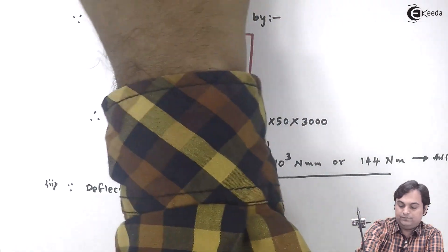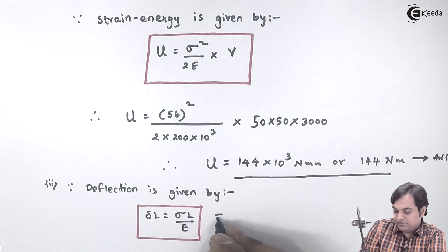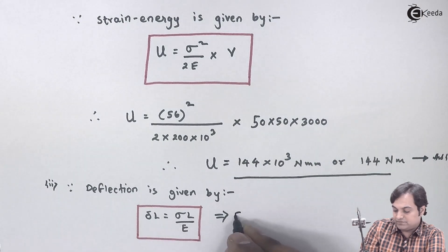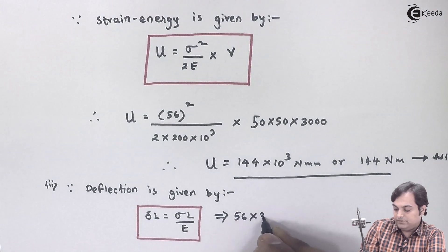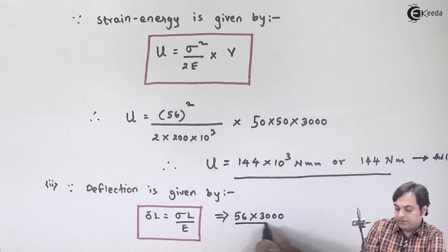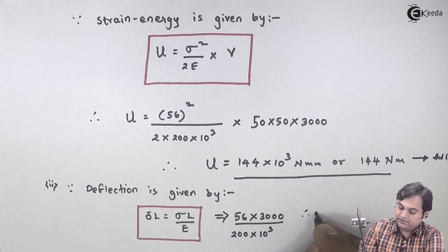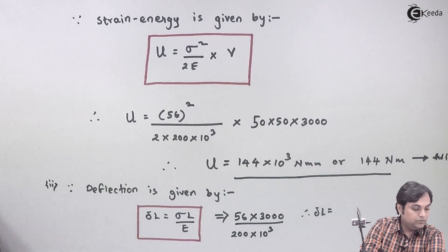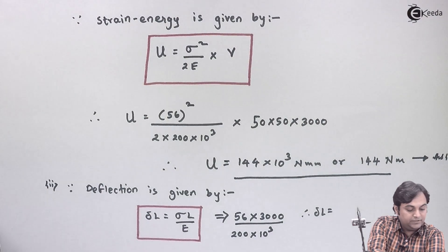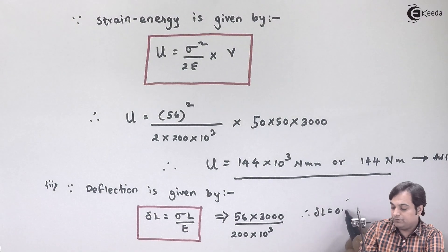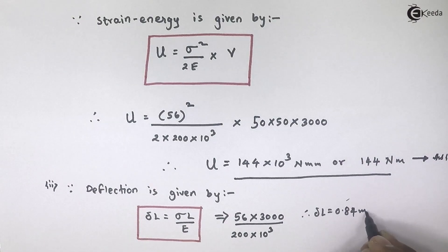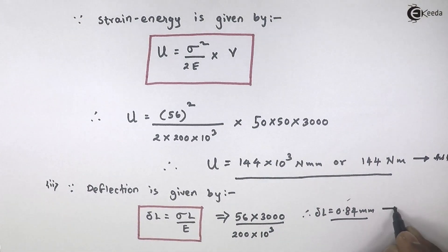So therefore, deflection will be equal to stress is 56, length is 3000, capital E is 200 times 10 to the power 3. So from this, I can say that the deflection is equal to the answer which I have calculated—it is 0.84 mm. That's the second answer.